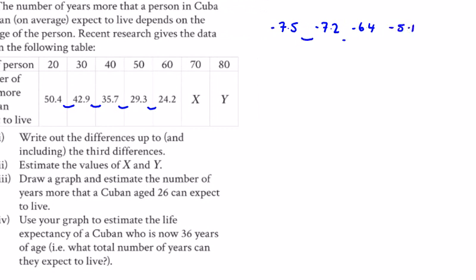Okay, that's the first difference. The second differences: it's going up this time, plus 0.3, it's going up 0.8, it's going up 1.3. And then the third differences are the same, they're all 0.5.